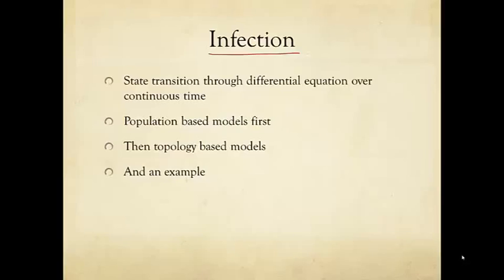Unlike other models, in our infection models we'll see state transition across more than two states, not just flipping from one to the other. We're going to see three states, for example, and there are variants with even more, four or five states. Also, instead of looking at discrete time, we'll look at continuous time through the more convenient mathematical representation of differential equations. We will first look at population-based infection models, which doesn't involve topology.